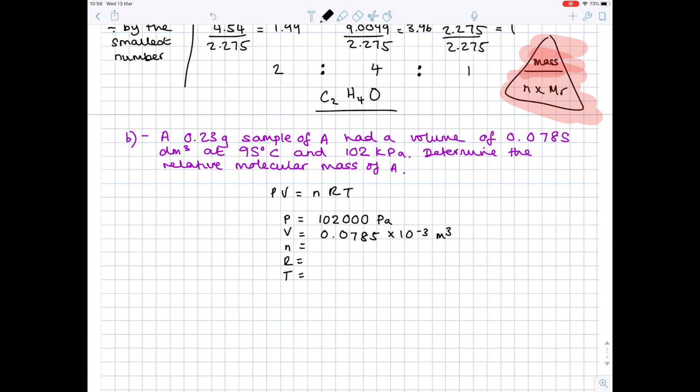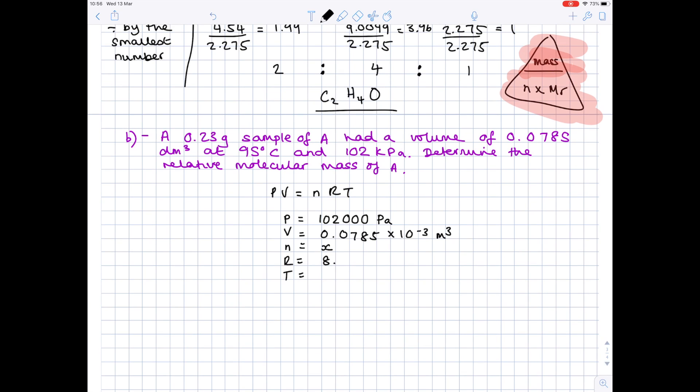N, there's no number of moles given, so we can hazard a guess that that will be our unknown value. Therefore, I'm assigning it x. R is the gas constant, which you need to know off by heart, which is 8.31. And lastly, temperature. This needs to be in Kelvin. So we take our degrees Celsius and we add 273 to it in order to make it into Kelvin.